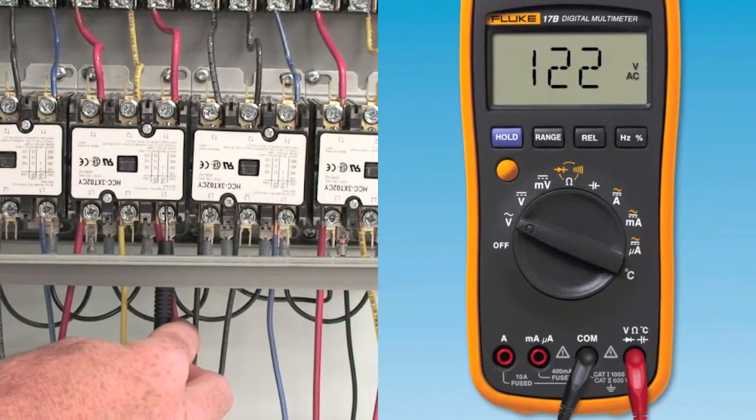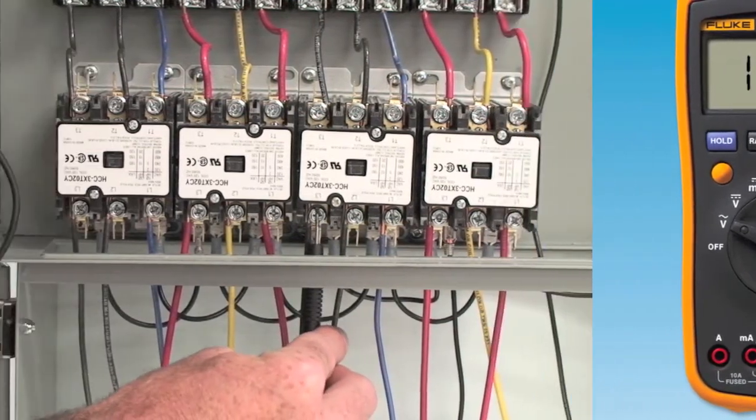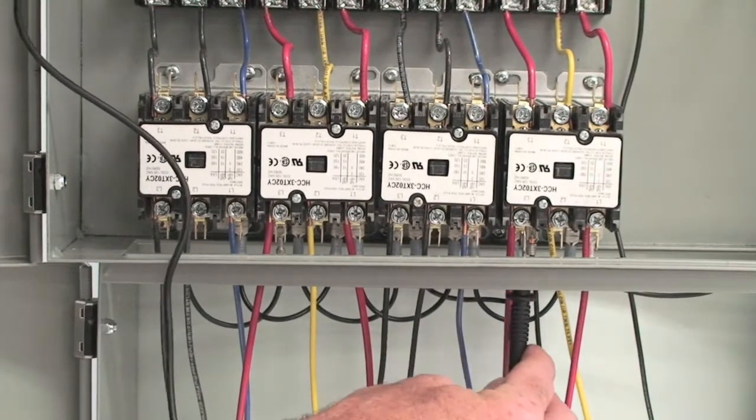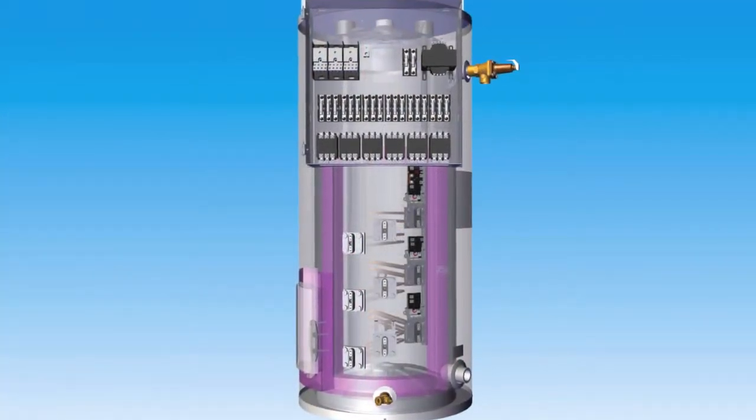If expected AC volts are not measured on either L1, L2, or L3, verify ECO is closed and thermostat is calling and replace corresponding contactor. Refer to parts manual for part numbers.